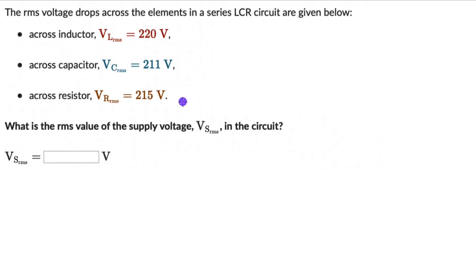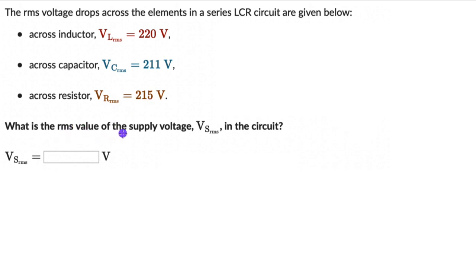Let's solve a question on voltage in a series LCR circuit. Here we have the RMS voltage drops across the elements in a series LCR circuit. This is across the inductor, across the capacitor, and across the resistor. The question is to figure out the RMS value of the supply voltage, that is V_s(RMS), in the circuit.